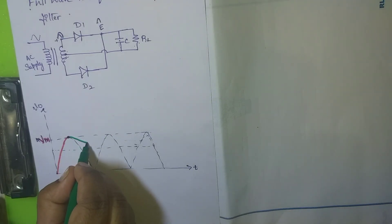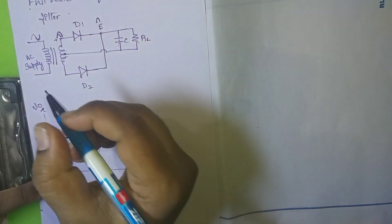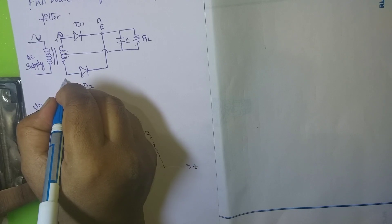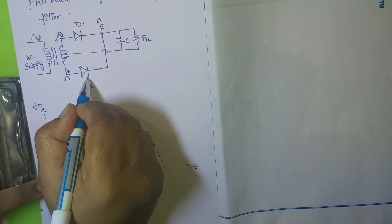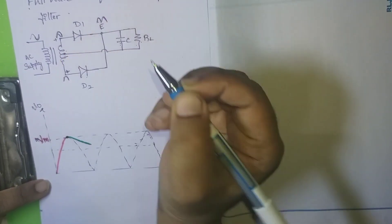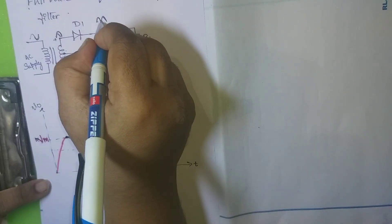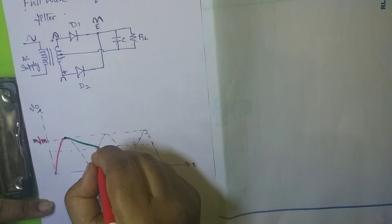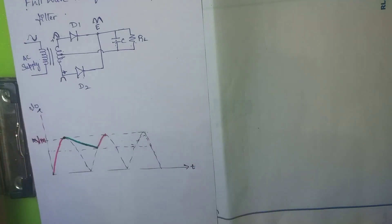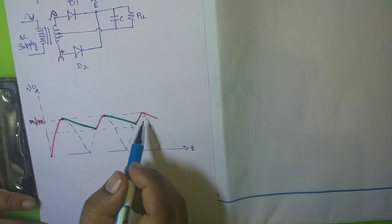The capacitor discharges slowly while the next peak arrives. The second half cycle produces another positive peak at point E, which turns on diode D2. When the capacitor encounters this next peak while still discharging, it begins charging again, reaches Vm, then discharges once more. This charging and discharging process continues repeatedly, giving us a near-DC signal.